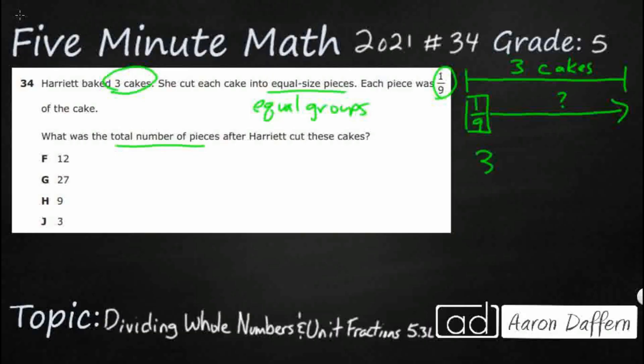It's going to be three divided by one-ninth. That's kind of strange, so I think I'm going to draw a picture. I'm not good at drawing ninths on a circle, so I'm going to make each of my cakes — I'm just going to turn them into squares.